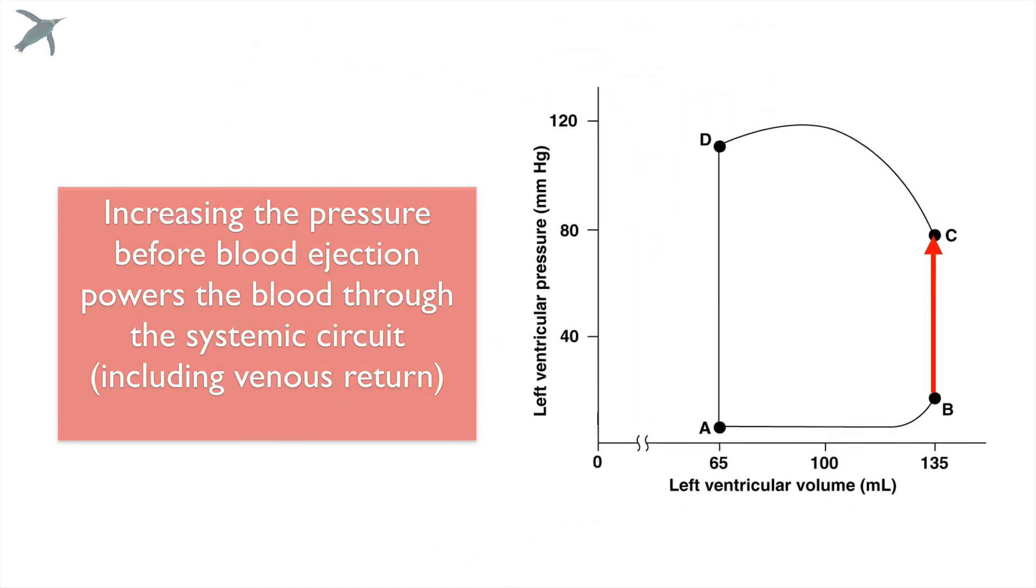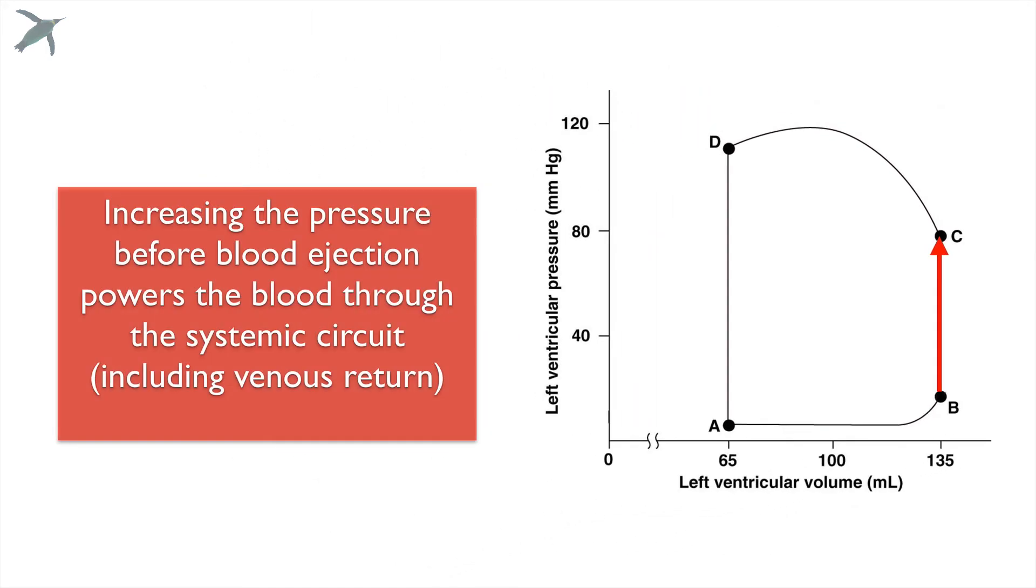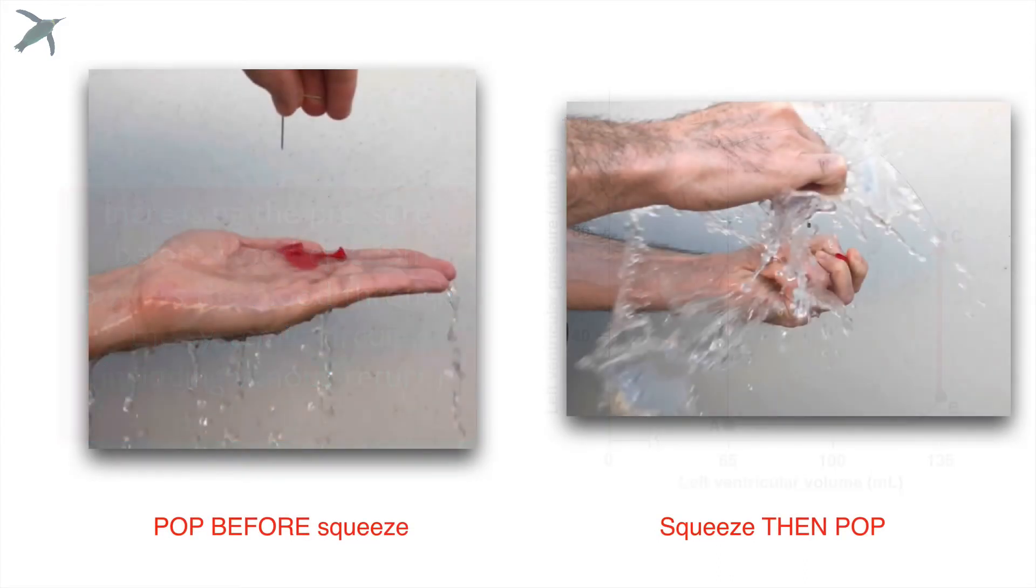I just want to reiterate this. Increasing the pressure before the blood is ejected is what powers the blood through the body. So keep this in mind. If you pop before squeezing, you're not going to have enough pressure to get the blood where it needs to go. You need the squeeze and then pop.